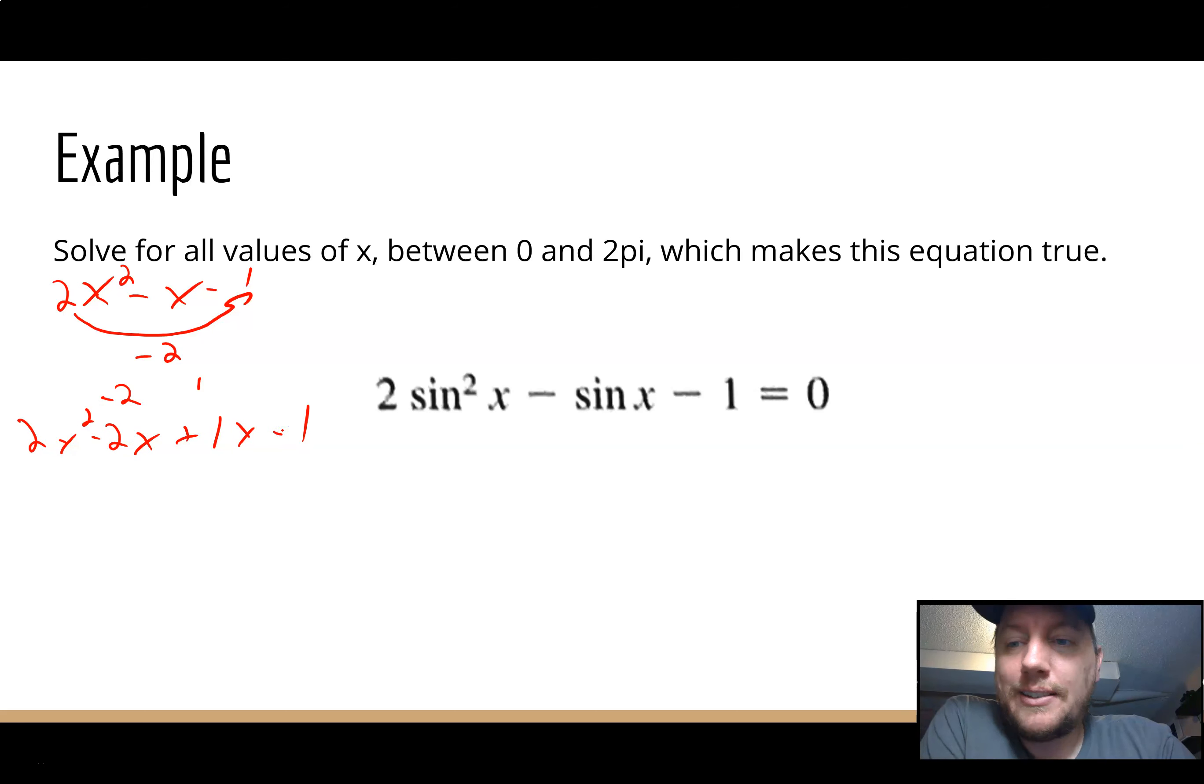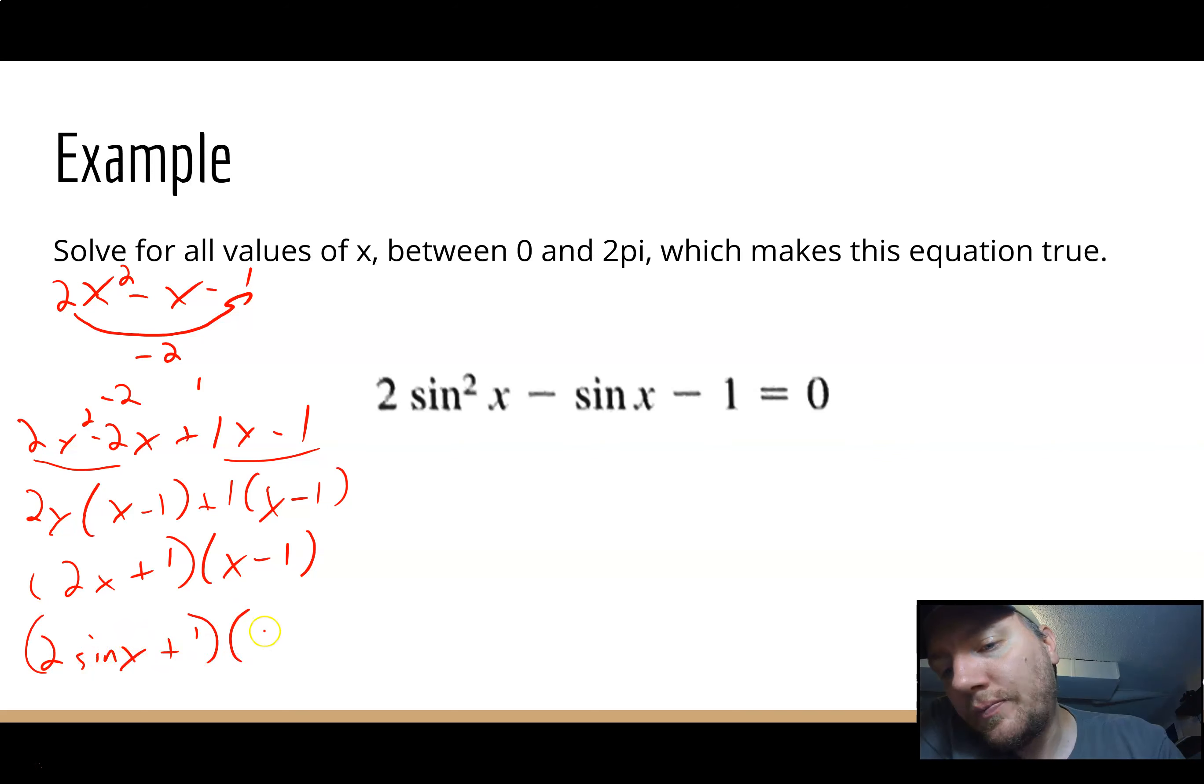And now I split that negative x in the middle. Remember, that's the convenient step we learned in college algebra to factor by grouping, because now if I look at the first half and the last half individually, I can pull out a 2x and left with x - 1. Over here, nothing to pull out, so I just pull out a 1: x - 1, 2x + 1, x - 1. Except those x's are sine x's. So we factored it.